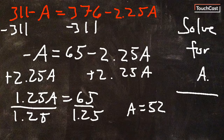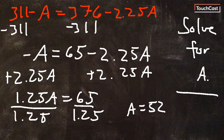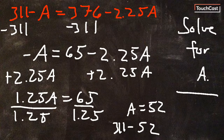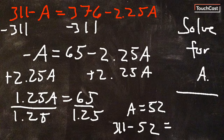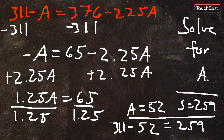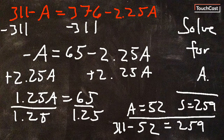That means 52 adult tickets were sold. Since the total number of tickets sold was 311, just take 311 minus 52, which equals 259. So the number of student tickets sold was 259. We answered both parts: 52 adult tickets and 259 student tickets.